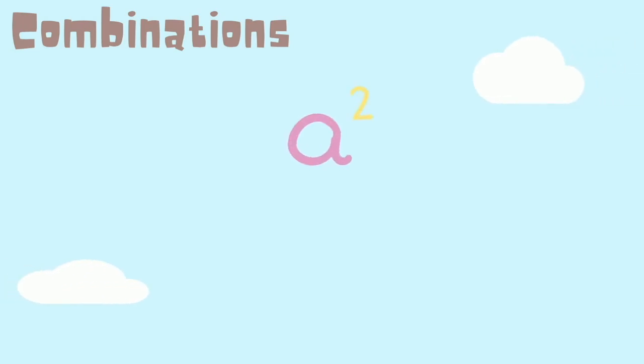When a letter is squared this means you times it by itself. For this example only the b is squared.